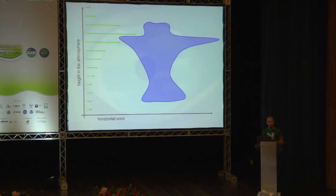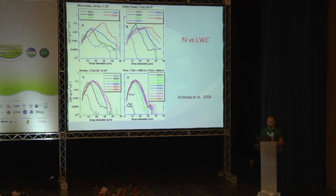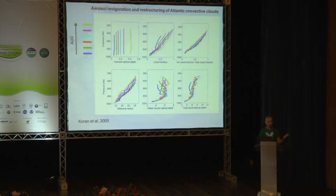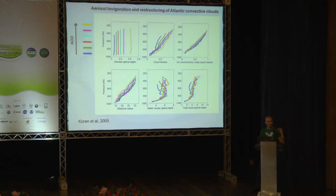To briefly go on the history of invigoration: it was shown by in-situ measurement over the Amazon during the smoke campaign with Andrea Rosenfeld. They showed how smoke can narrow the size distribution, delay rain, and make clouds larger. Then invigoration was shown using satellite data all over the Atlantic, showing that larger AOD produces taller, deeper clouds — and you can see the Twomey effect per each given pressure level, which is quite a challenge when dealing with convective clouds.